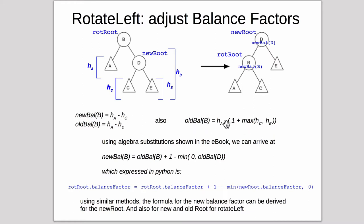So these three equations you can combine with algebra, which he goes through in the book. And you eventually arrive at this equation. That the new balance of B is equal to the old balance of B plus 1 minus the min of 0 and the old balance of D. And equivalently you can find out the new balance of D. And so that's what's plugged into the code that we looked at earlier.